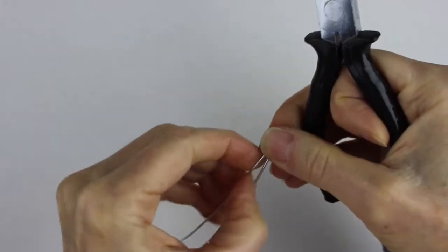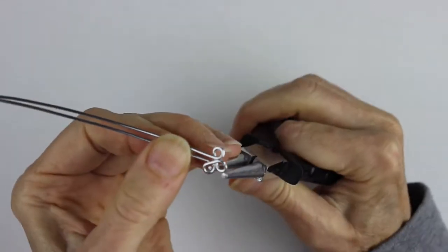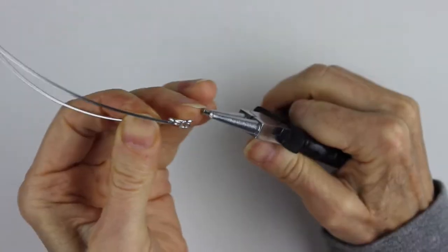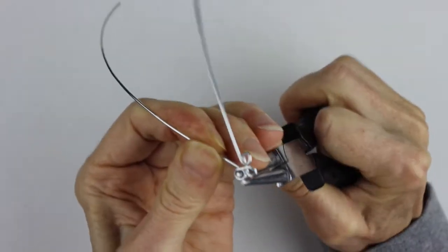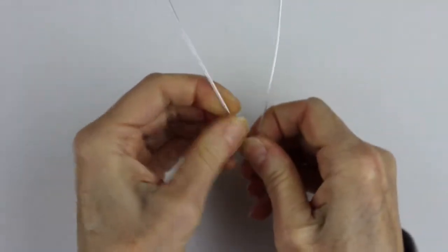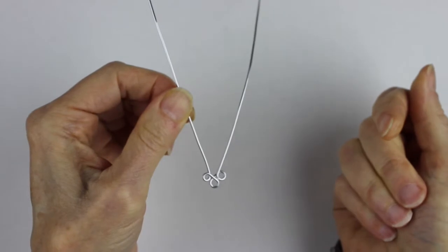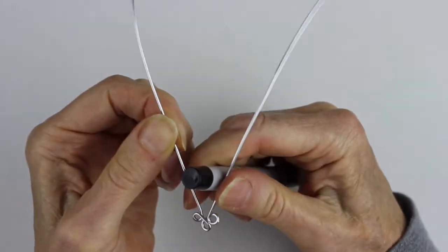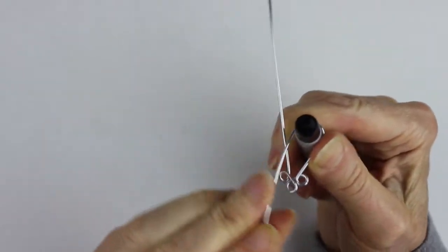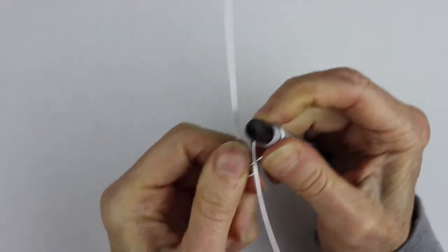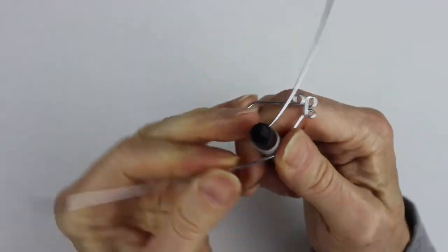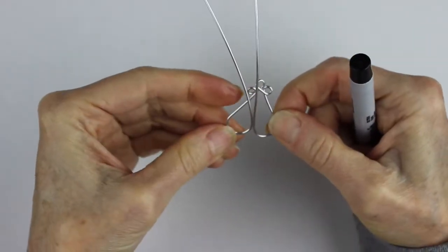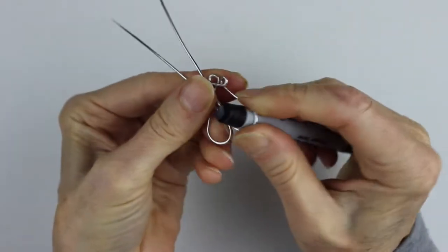From there we can bend them out a little bit because we want it to be thicker underneath. Then take a round form—I'm just using a sharpie—and we're just going to pull one end around like that, and then the other side. You just want to wiggle it around so they're about the same on each side, sort of symmetrical.